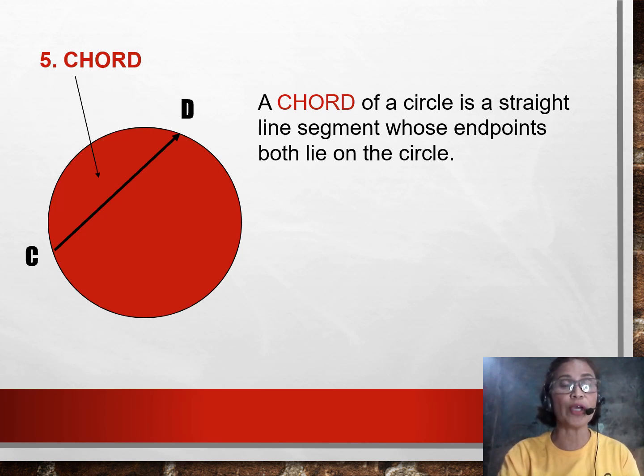For example, a chord from point C, then it was connected to another point on the circumference, point D. So, this chord can be named as Segment CD or Segment DC and they mean the same. Now, do remember, all diameters are chords, but not all chords are diameters.